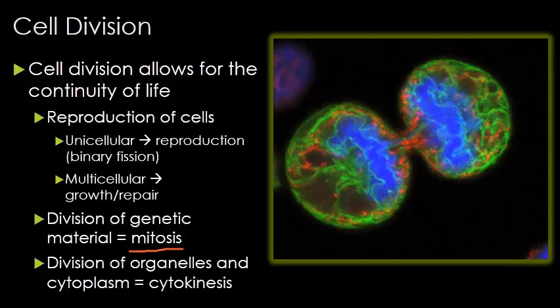Mitosis is when the genetic material is split — the nucleus goes away and you split the genetic material until you form two new nuclei. When you actually split everything else, that is cytokinesis. 'Cytos' is cell and 'kinesis' is split or move. So mitosis and cytokinesis, while connected, are not the same thing.